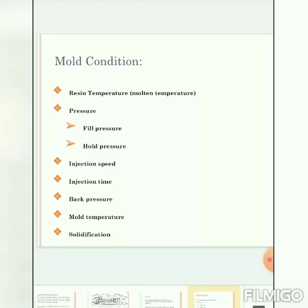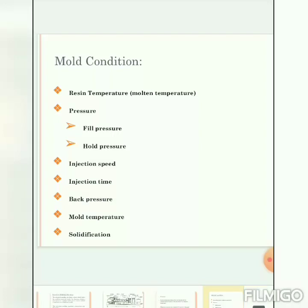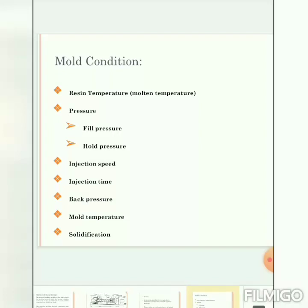Back pressure is normally about 5 to 10 kg/cm². If the back pressure is too strong, it might degrade the plasticization ability. Mold temperature is generally 60°C to 80°C. This is a most important point in molding conditions — if the molding cycle is high, the temperature increases, but coolant is used to control the temperature.